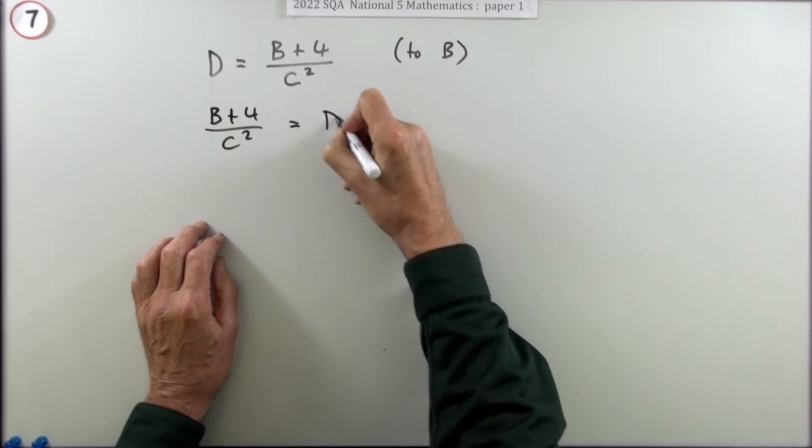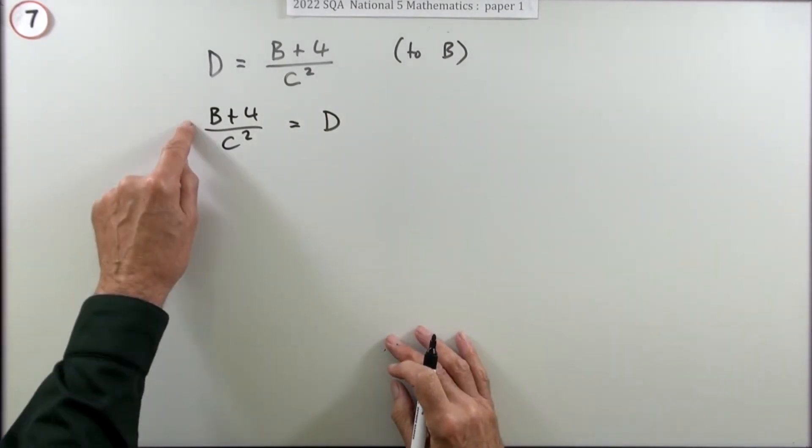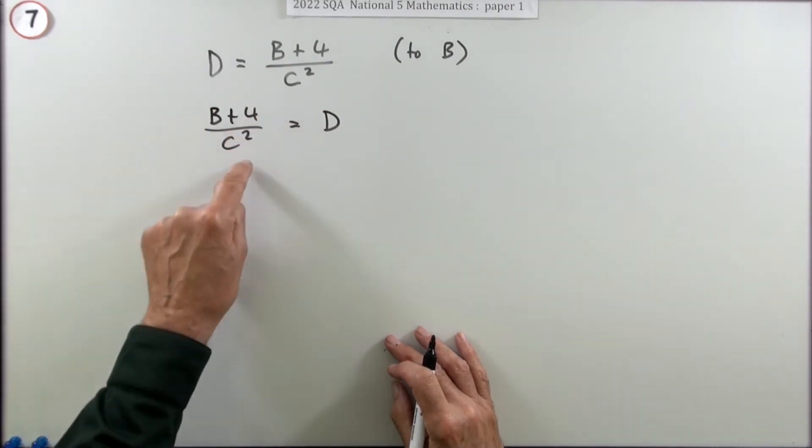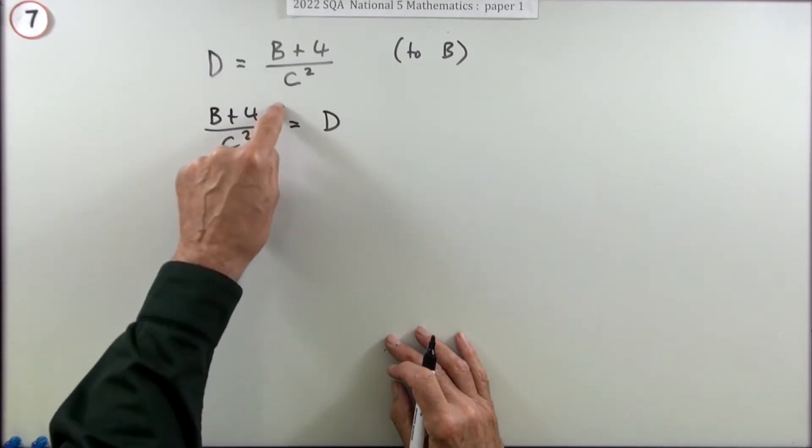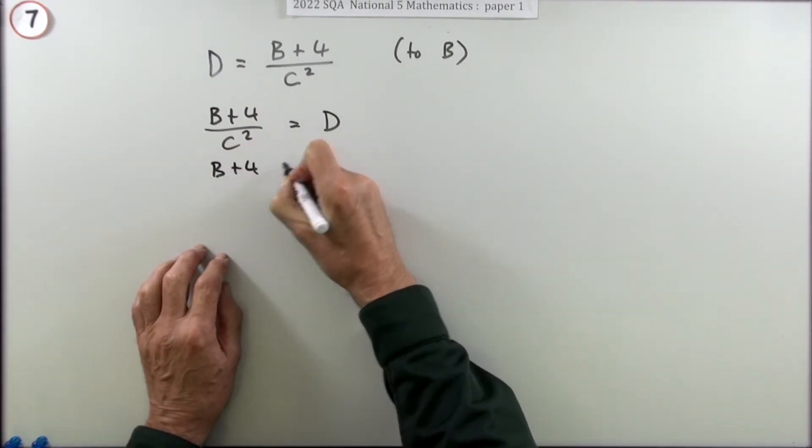That doesn't get a mark, it just gets it into the right order because I want to get B, so I can see the two things I want to get rid of. The thing you get rid of first is this division.